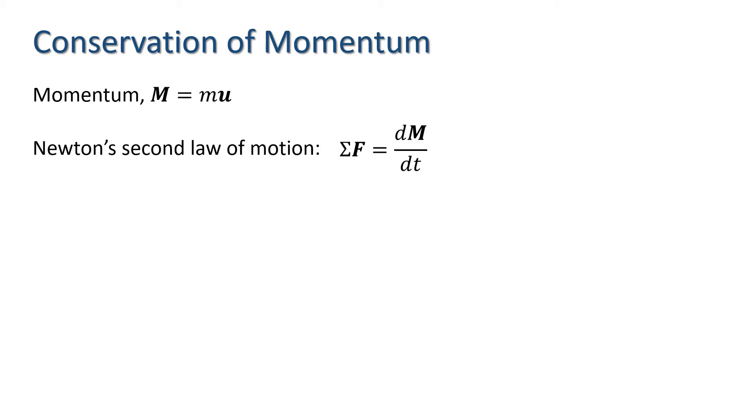Newton's second law of motion states that the sum of the forces acting on the body is equal to the rate of change of momentum of the body. This can be written in the form impulse equals change of momentum.